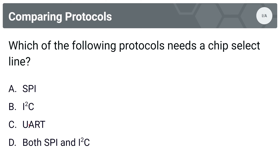Next question: which of the following protocols needs a chip select line? Options are A, SPI; B, I2C; C, UART; or D, both SPI and I2C. The answer is A, SPI. SPI requires a chip select line for each peripheral. Unlike I2C, which uses addressing to determine the peripheral, and UART, which doesn't have a concept of addressing because there's only one peripheral.